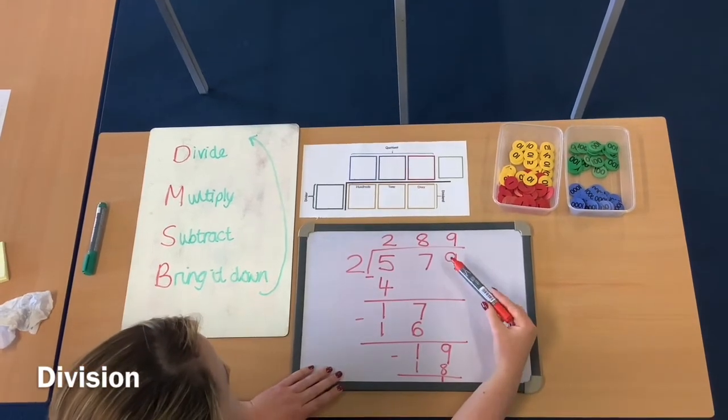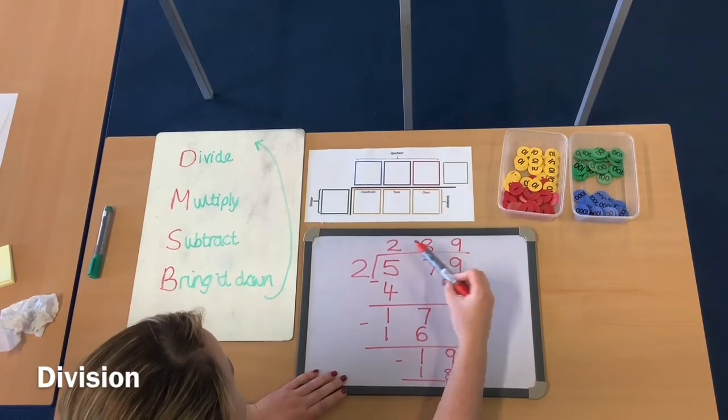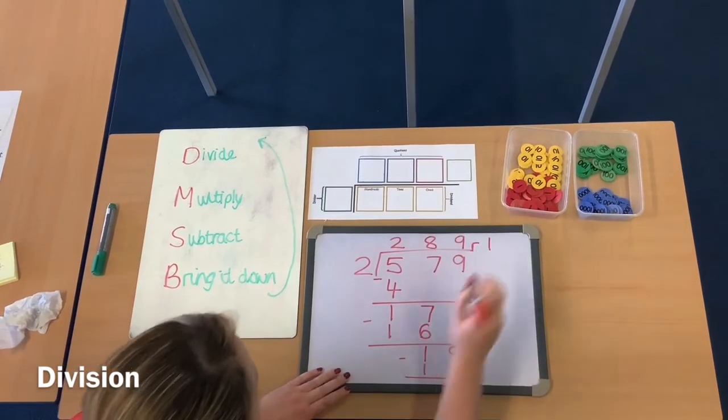Which means that I do have a remainder. So the answer, or the quotient, is 289 remainder 1.